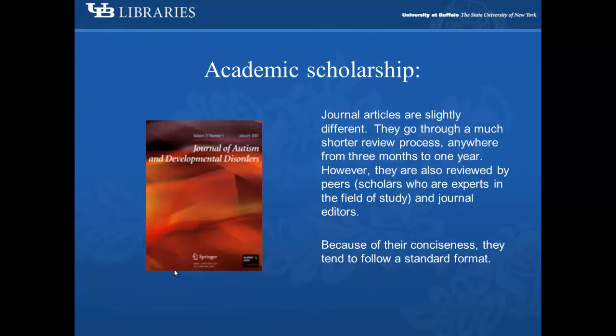Journal articles are slightly different. They go through a much shorter review process, anywhere from three months to one year. However, they are also reviewed by peers — scholars who are experts in the field of study — and journal editors. Because of their conciseness, they tend to follow a standard format.